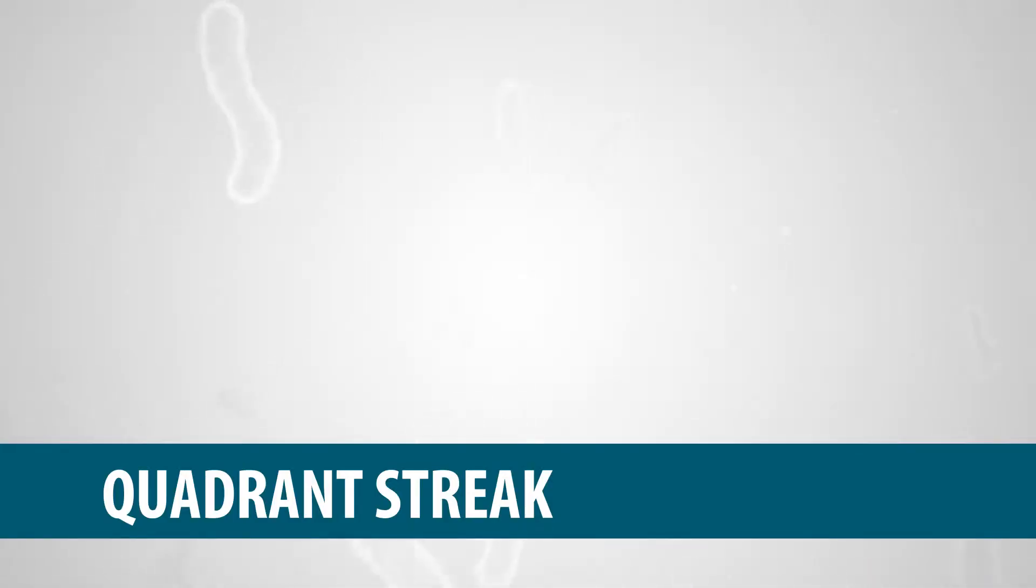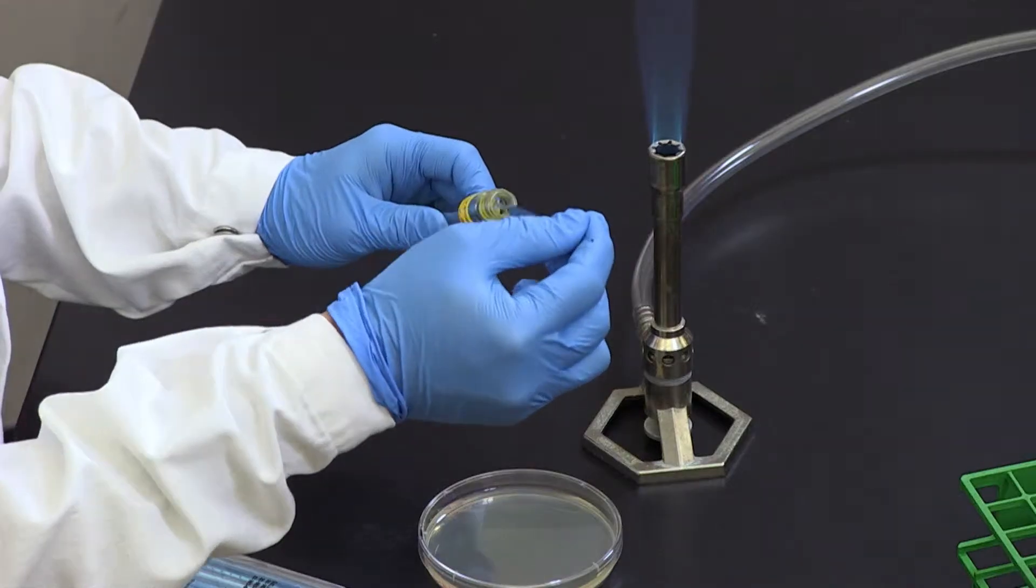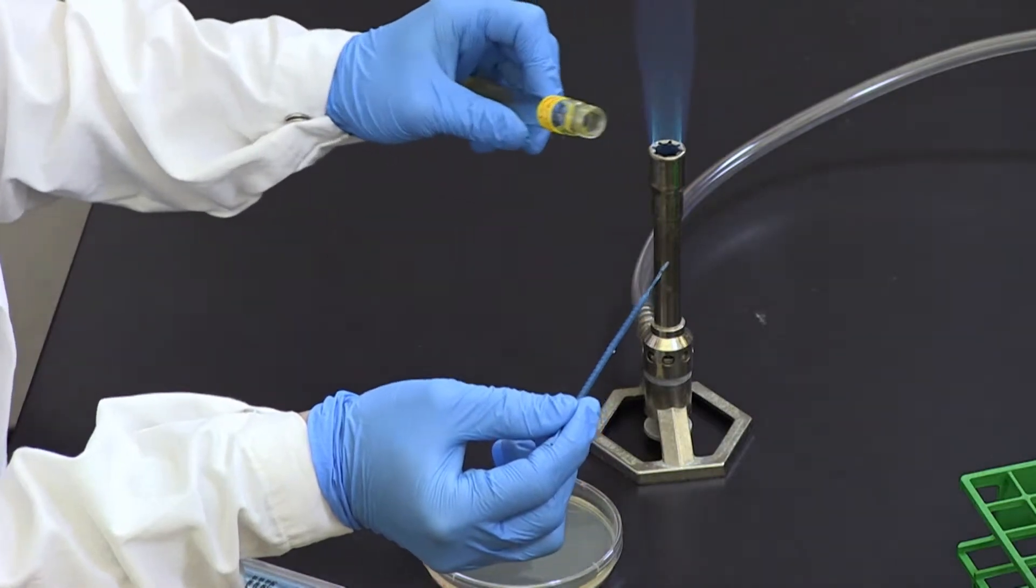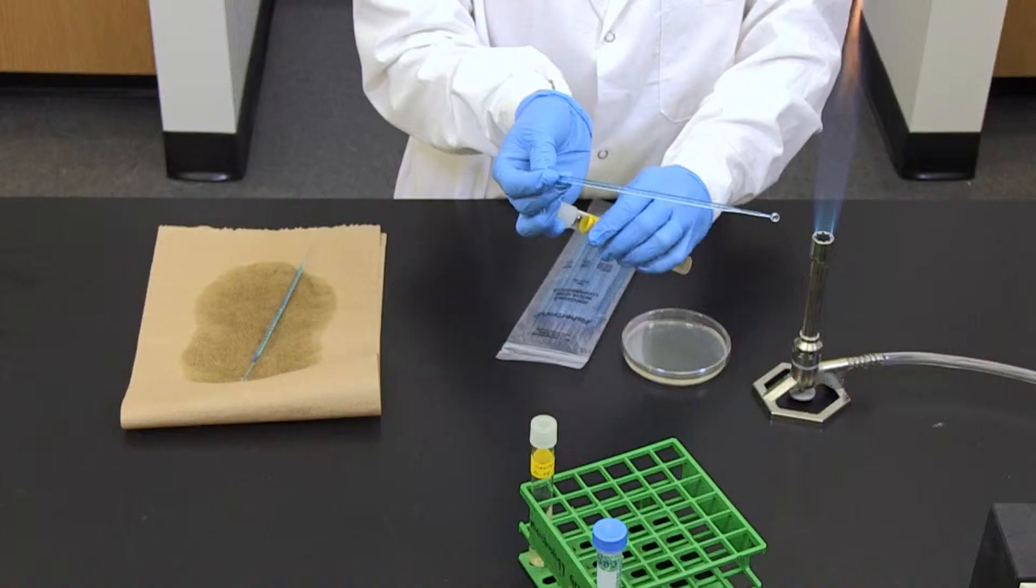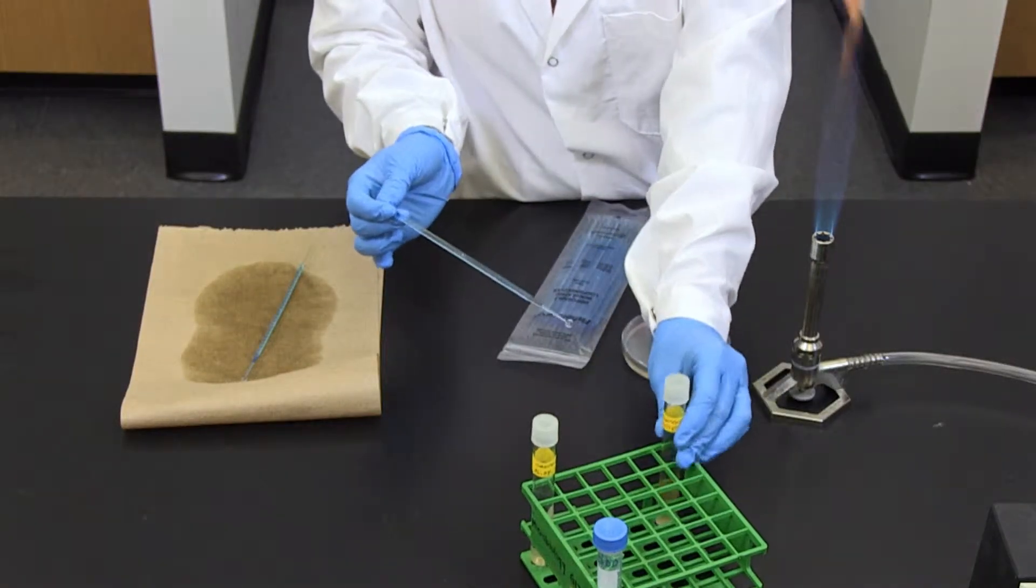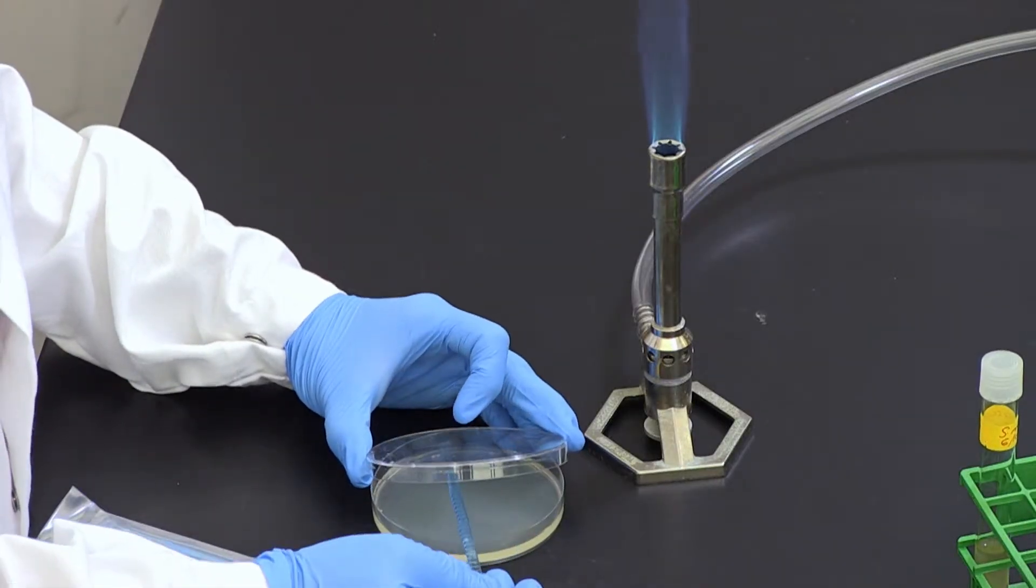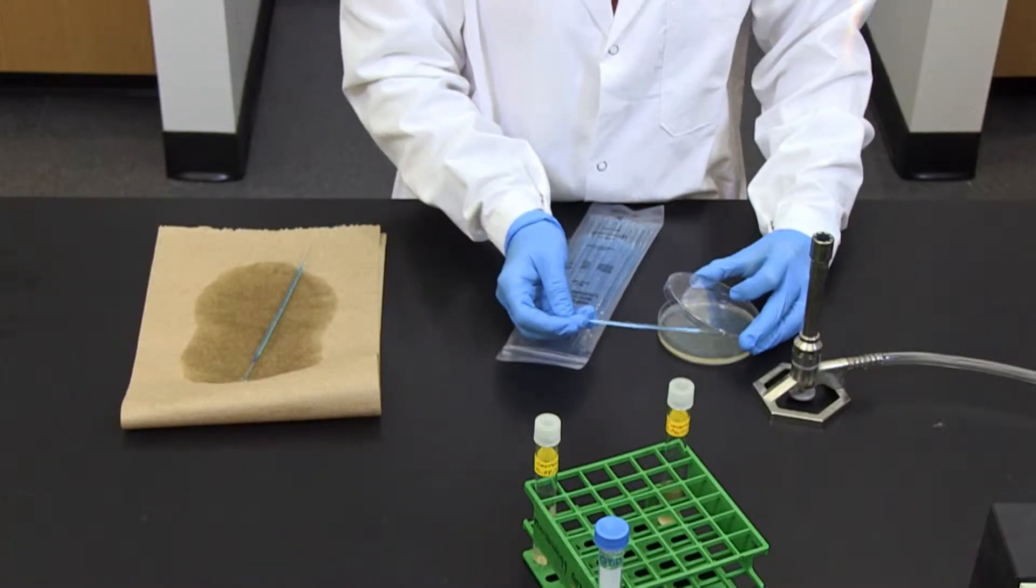Quadrant Streak. First, apply aseptic technique, streaking an inoculating loop full of microbes from a mixed culture back and forth over area 1 once. Apply lightly to avoid gouging the medium.